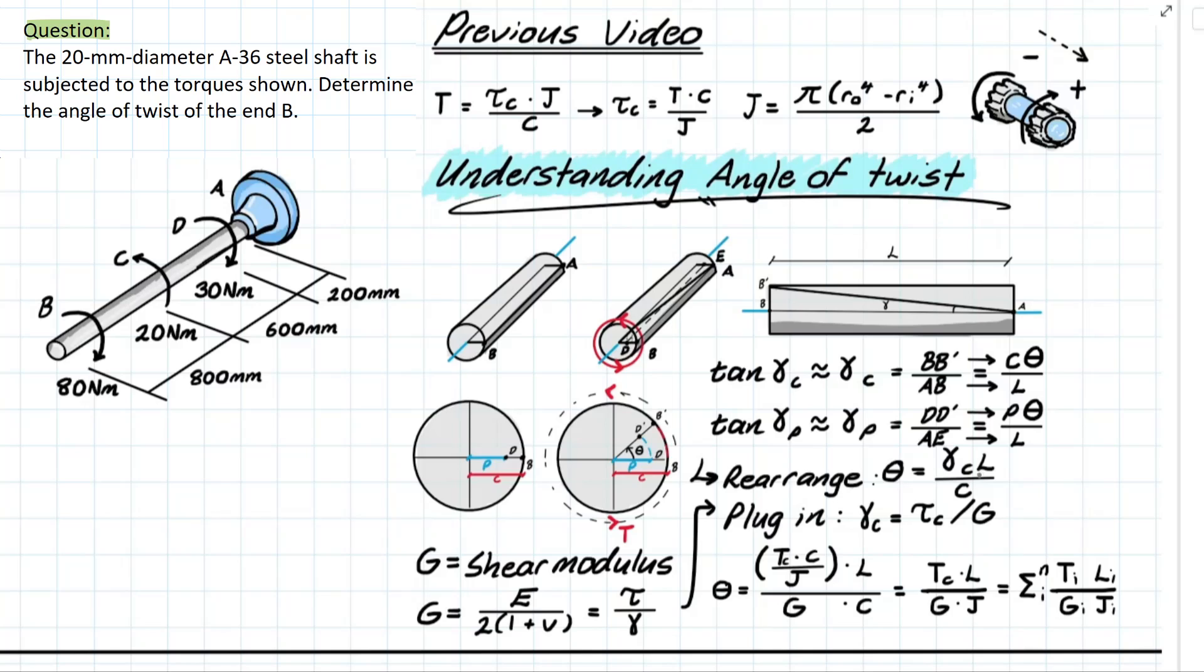Now we just need to plug this back into our original formula the angle of twist and we have something that looks like this. But we can make this even simpler by using our torque formula that we solved for previously and rearranging that for the shear stress at c.